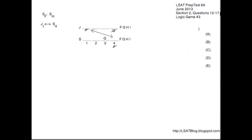We have the first rule: snacks are delivered to F at some point before they're delivered to H. So on the side I have SF is earlier than SH — the dash means that whatever's before the dash occurs at some time before whatever happens after the dash. They tell us that G cannot be fourth for juices, so I put G is not fourth under the juices space. We know that G must be the third school for snacks, so I put that right on the diagram.